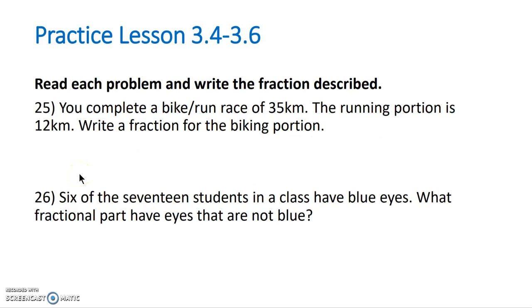We finished off on these word problems. When we look at Question 25, you complete a bike run race of 35 kilometers, the running portion is 12 kilometers, write a fraction for the biking portion. Well, let's write what we do know. We know that the running portion was 12 out of the 35 kilometers, which means that the biking portion is the rest. So we can take the total, 35, and we can take away the 12 kilometers for the running, and that will give us our value. So 35 minus 12 is 23.